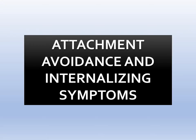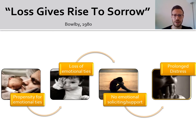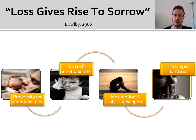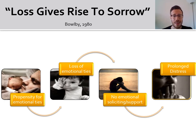So let us first touch base on the theoretical link between attachment avoidance and internalizing symptoms. Bowlby noted that loss gives rise to sorrow. Early in life we have a natural propensity to form emotional ties with our primary caregivers. However, as sometimes is the case, if we lose these emotional ties — either because we lose the parent physically, or because emotionally the parent is not available to us, or outright rejecting us when we need — we develop an expectation that support may not be there when we need it, and we stop soliciting support from our caregivers and later on through other attachment figures. That leads to a prolonged sense of distress which is known to cause and be a strong correlate of both depressive and anxiety symptoms.